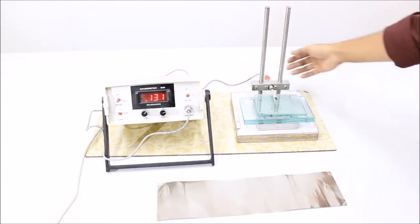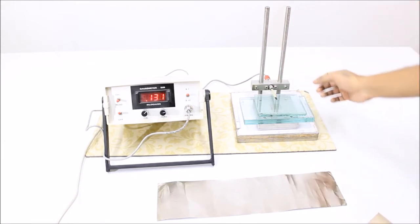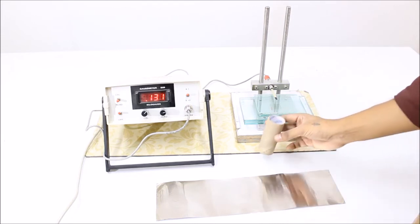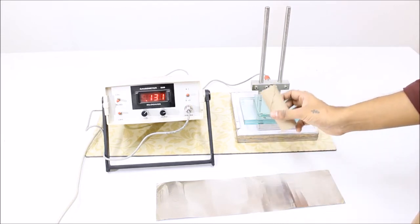This is a gauss meter with a hall probe connected to it. I have placed a magnet beneath the hall probe. This is a barrel which is made up of a non-magnetic material.